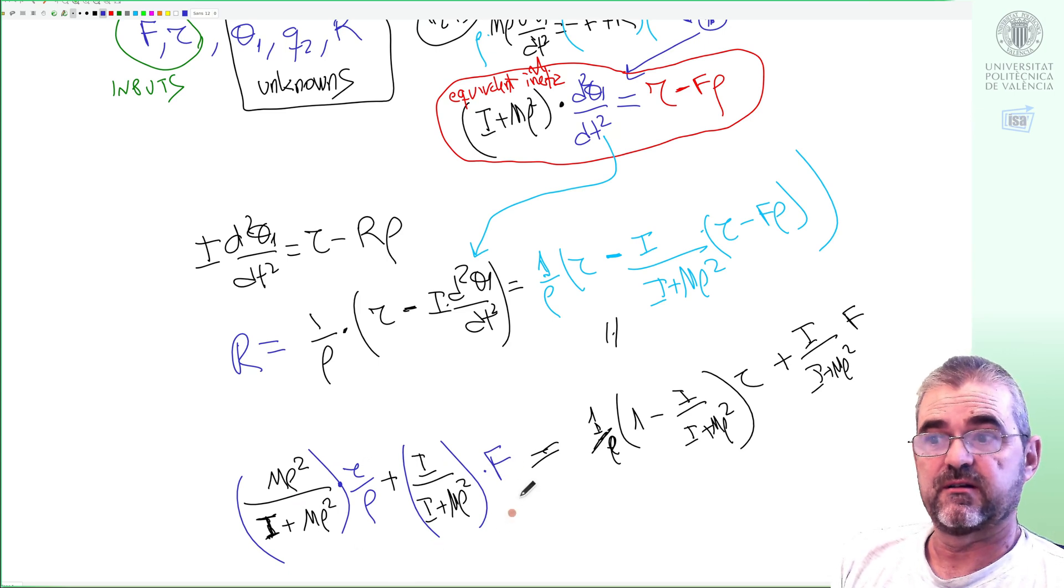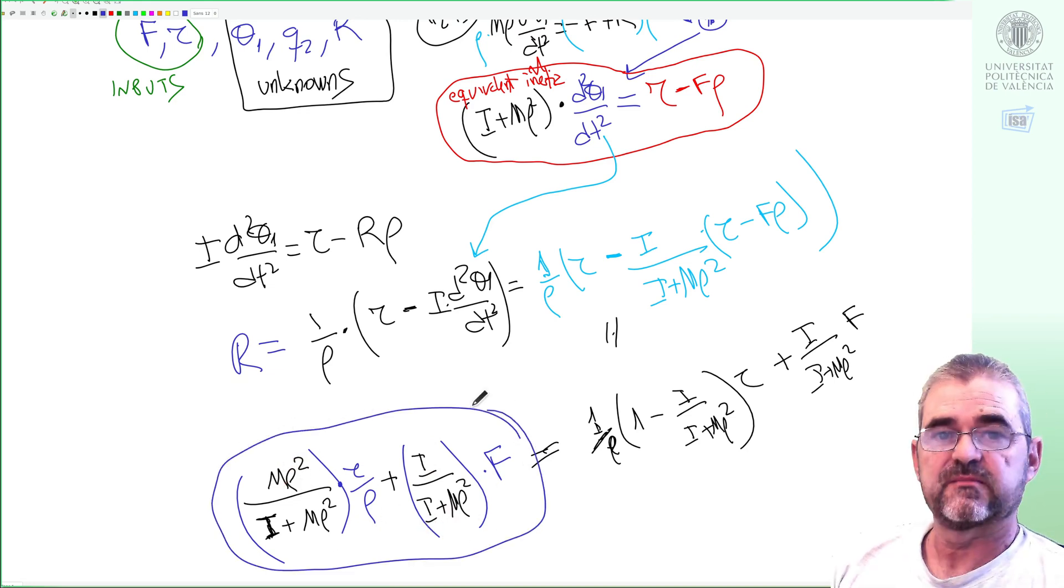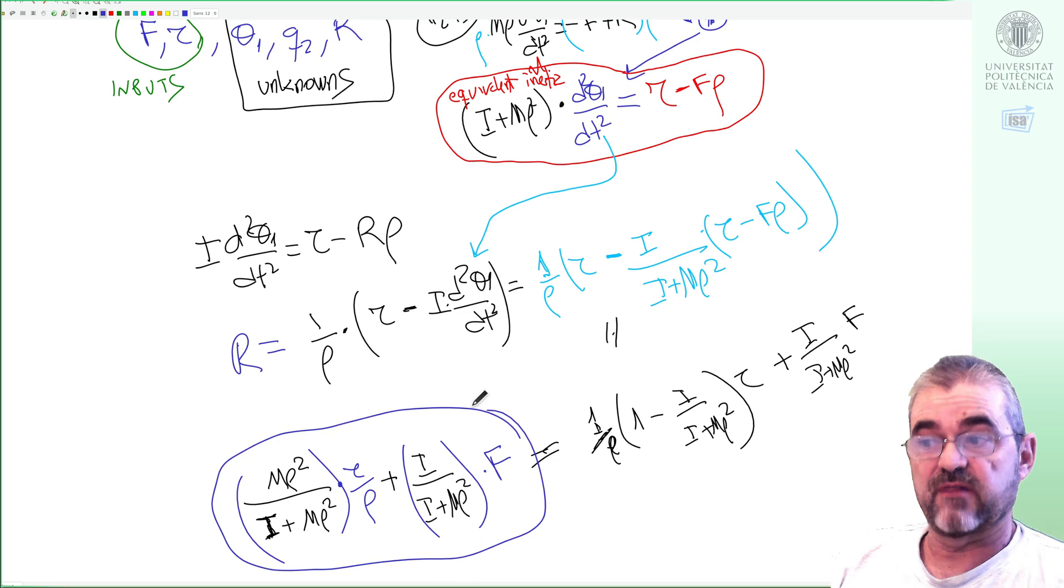This expression involving f and tau. I divide by rho to have sort of force equivalent expression so this is kind of a convex combination of the inertia and the m rho squared.